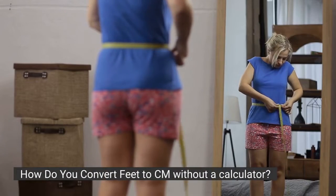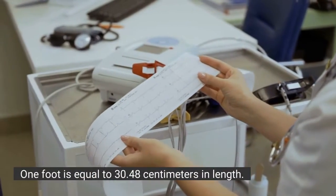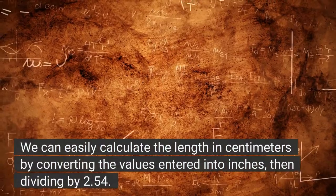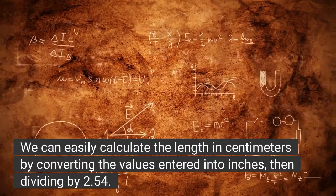How do you convert feet to CM without a calculator? One foot is equal to 30.48 centimeters in length. We can easily calculate the length in centimeters by converting the values entered into inches, then dividing by 2.54.